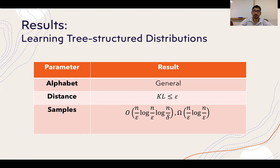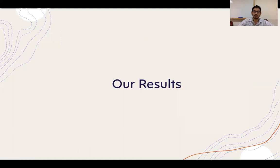We work with the KL distance function because through Pinsker's inequality it gives an upper bound for total variation and Hellinger distances. We also show an almost tight sample complexity of n/epsilon · log(n/epsilon), showing both upper and lower bounds.